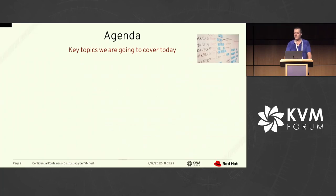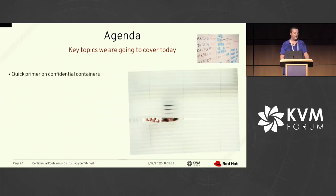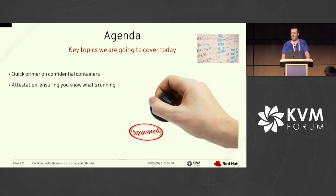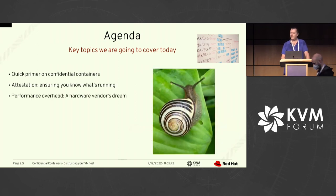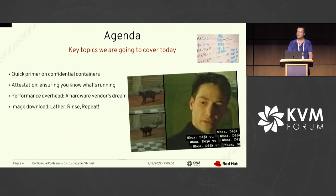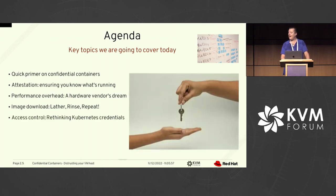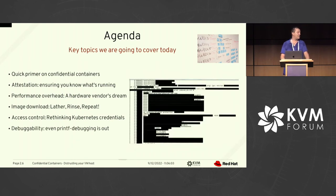The agenda for today is: first, a quick primer on confidential containers. We are going to talk about attestation, which is ensuring that you know what you're running. We'll discuss performance overhead, and confidential containers being a hardware vendor's dream. We'll cover image download — a matter of lather, rinse, repeat. Finally, access control, which means we need to rethink Kubernetes credentials. And I'll quickly browse over debugging to say we can't.